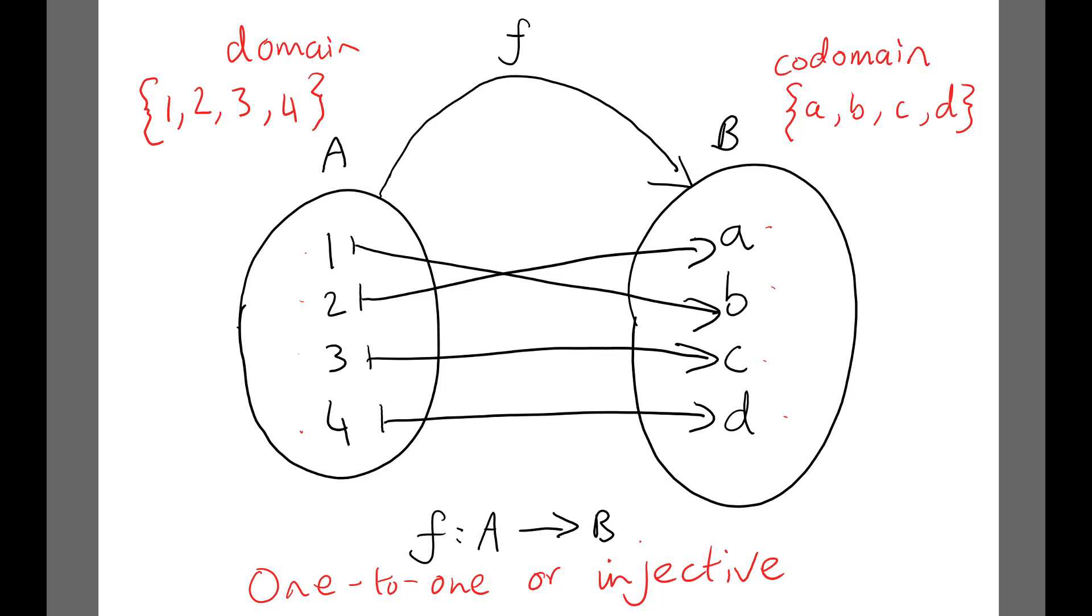A function is one-to-one or injective if the elements do not map more than once to the elements in B or the codomain. One-to-one or injective.